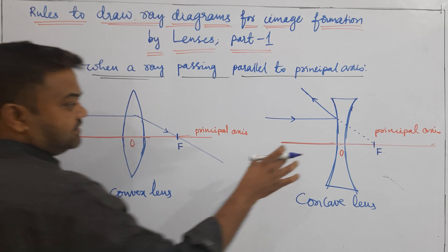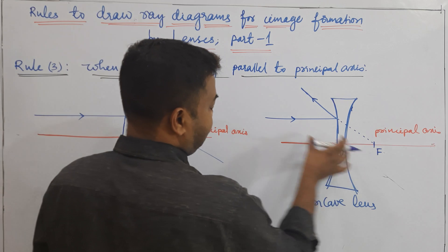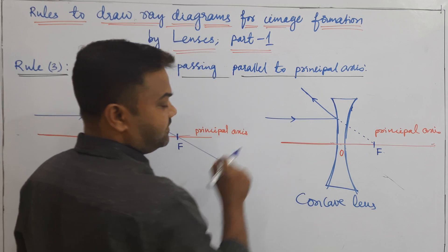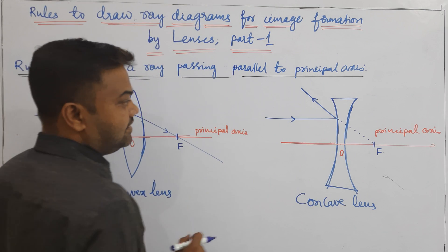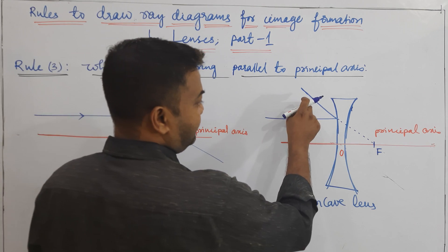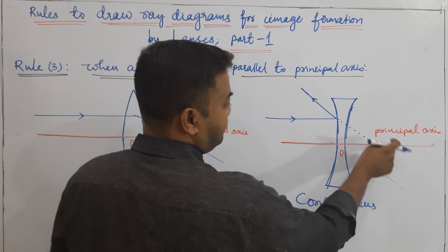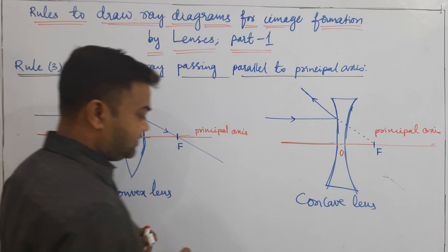In the case of a concave lens, when a ray parallel to the principal axis, after refraction, it appears to come from F — from the focus point.